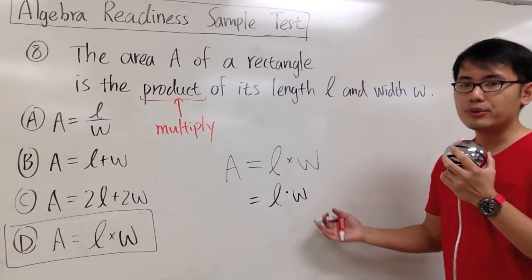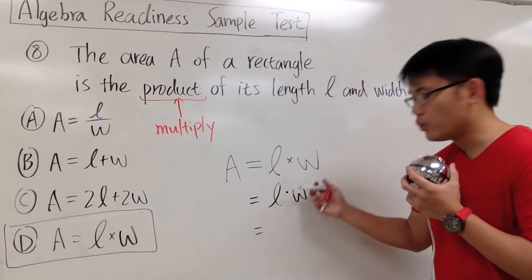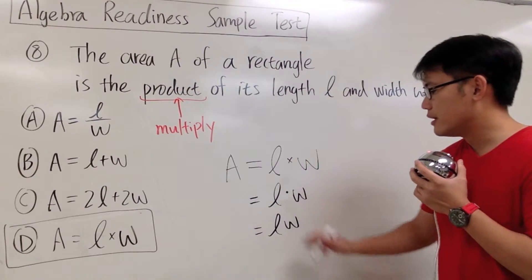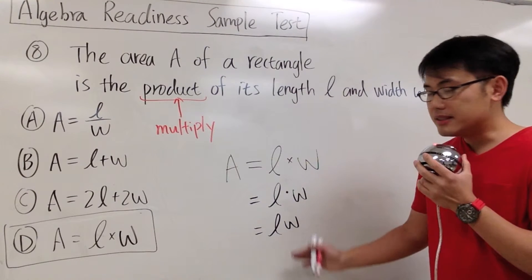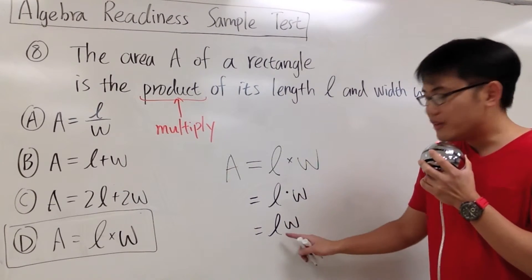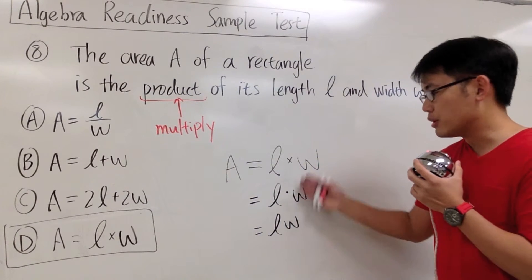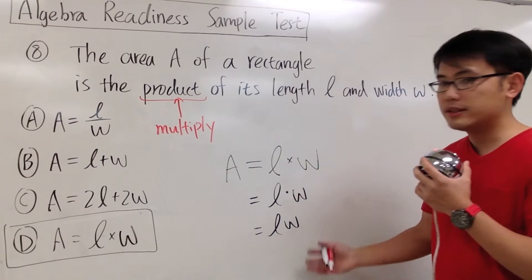It also means L times W. I can also ignore the dot. I can just put down letter by letter, L, W. It means that we are multiplying L times W. Whenever there's no operations indicated in the middle, it's implied that we are multiplying. So these are a couple ways to do it.